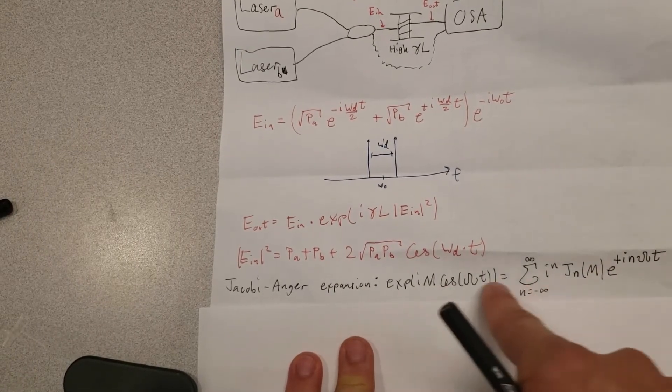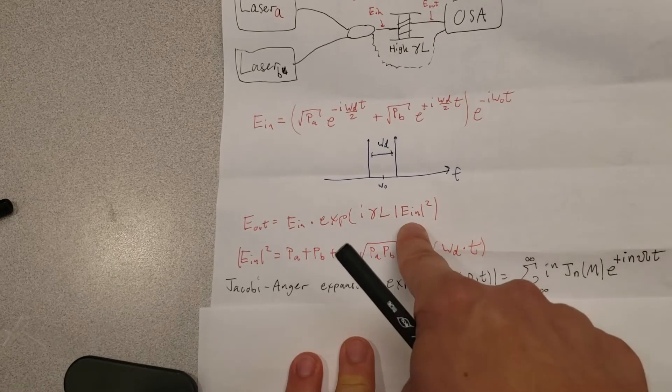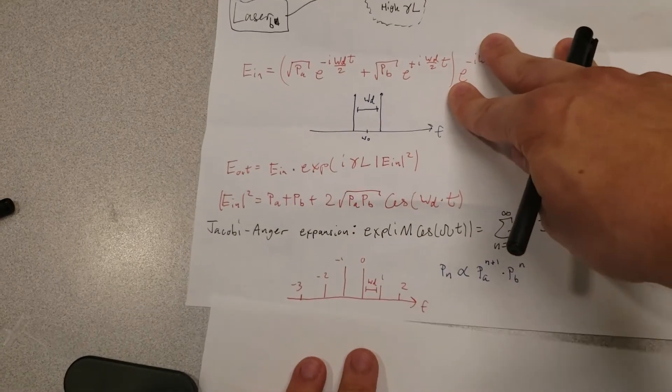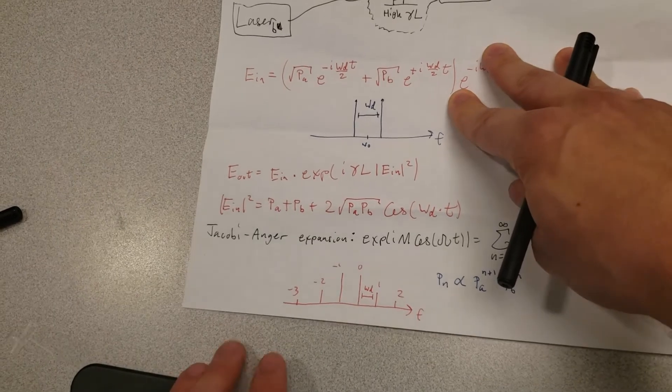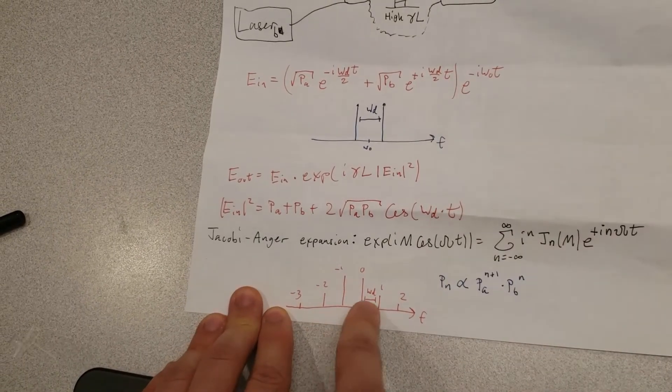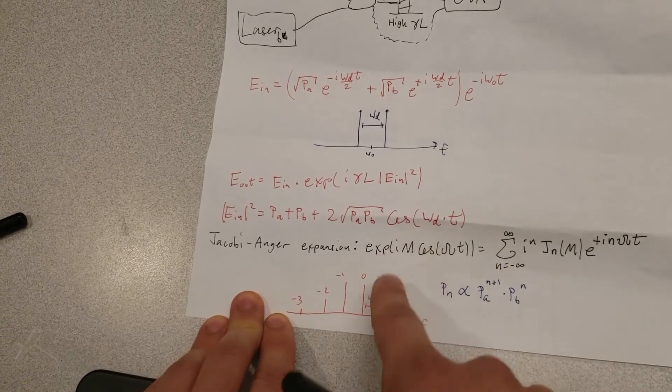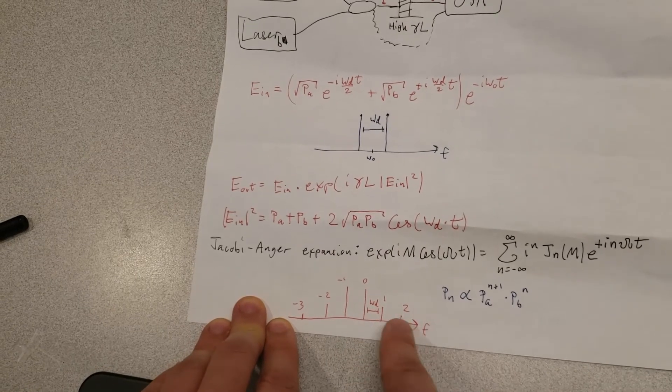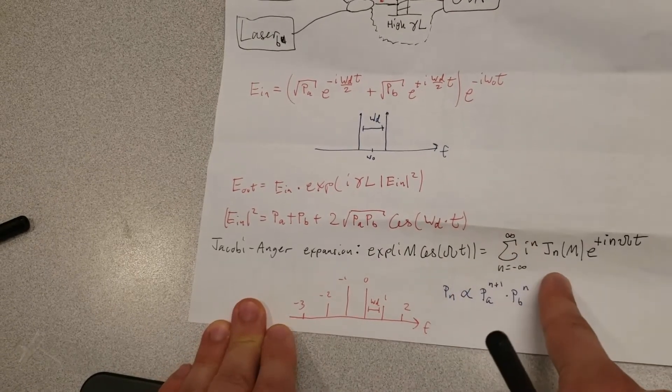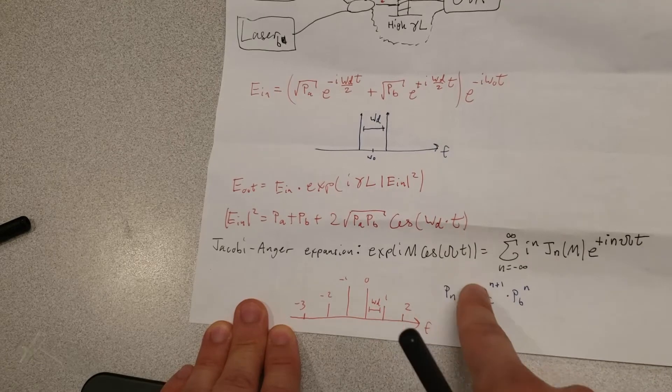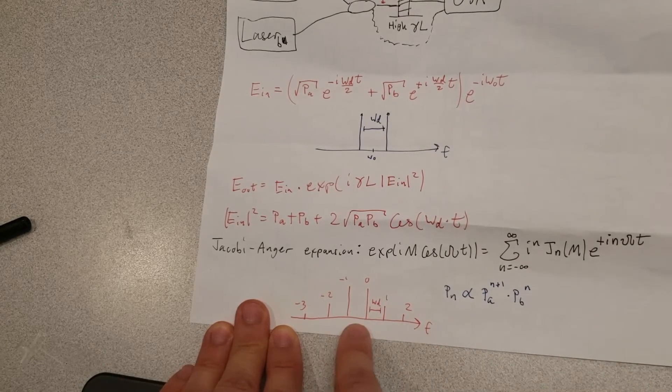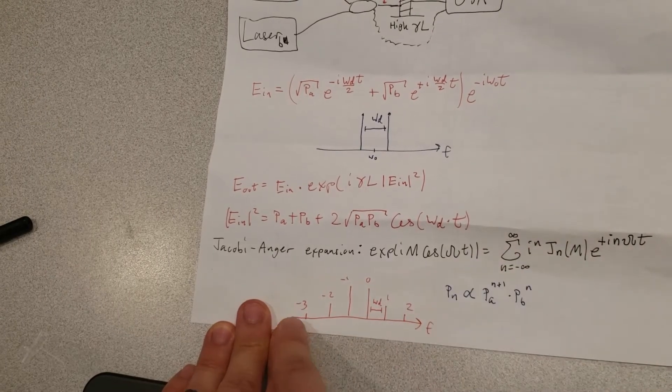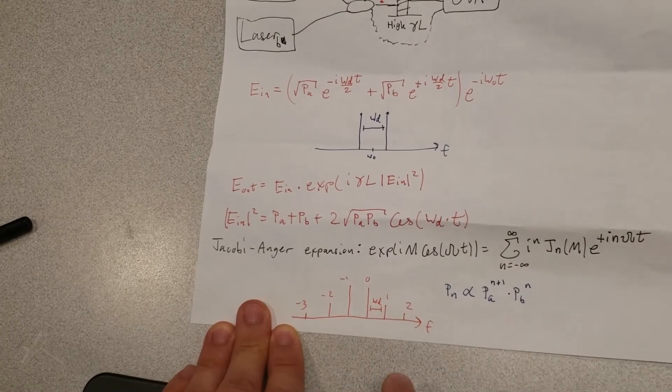If we apply this expansion to this expression, what we get is an expression that tells us the power of each individual sideband as a function of the input powers. I'll skip the calculation here, but you can read my thesis which should be linked in the description once it gets published. Then you can see the exact derivation getting from here to the description of what the power of each sideband is.